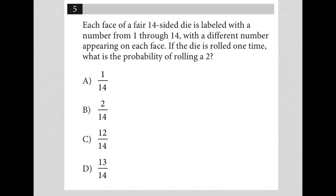Fair 14-sided die just means it's not weighted. It's not leaning towards landing on a certain number over another number. There's no duplicates of the same number. Each side has another number and that is 1 through 14 with a different number appearing on each face.